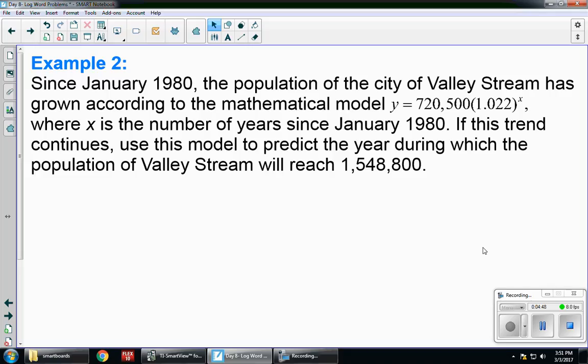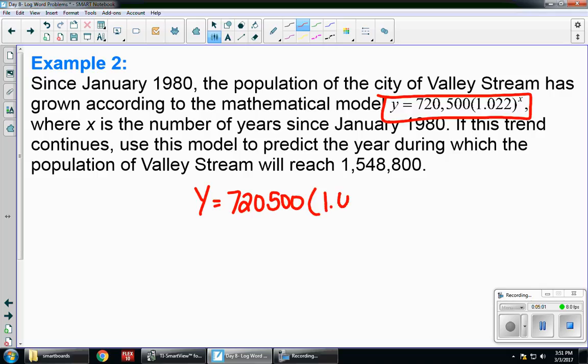So they're giving me an equation. Whenever they give you an equation in the question, you always want to start with that equation. Never make up your own. So Y = 720,500 × 1.022^x. They want it to reach that 1,000,000 number. Well, that's what Y is. And I'm solving for x.